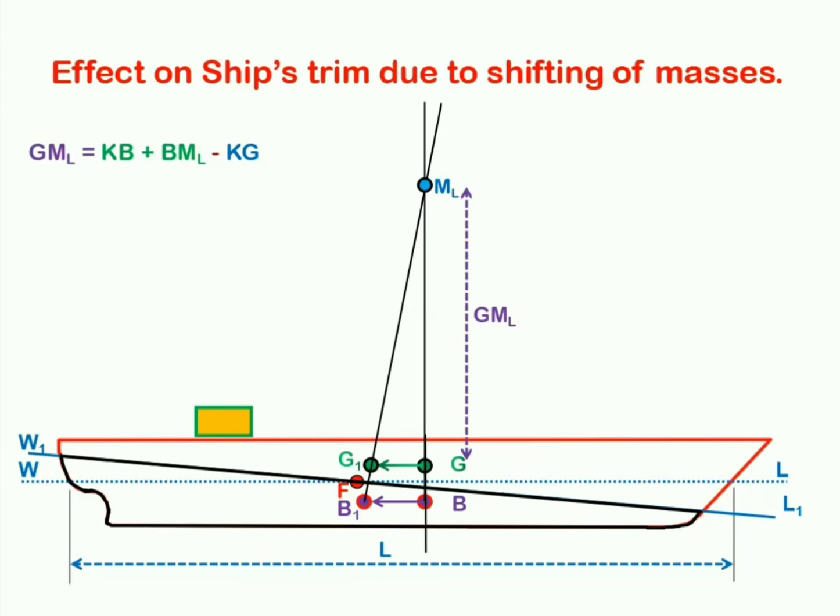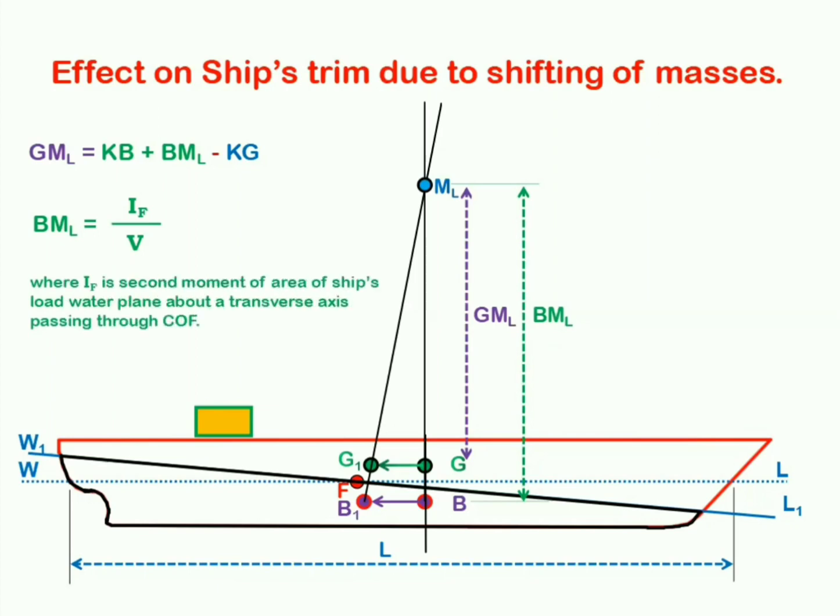Now, KB and KG, whether we are defining them in transverse stability or in longitudinal ship stability, they remain same. So, we do not really need any special notation for them. On the other hand, BM, which is the vertical distance between point B, center of buoyancy, and point M, that is metacenter, in case of longitudinal ship stability, it will be the ratio of moment of inertia of lower water plane about a transverse axis passing through center of floatation to the volume of displacement.